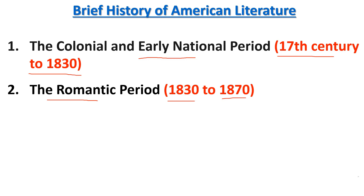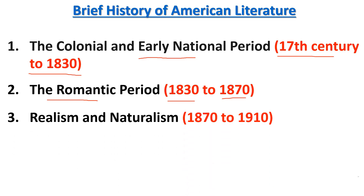Moving on to the third period in the history of American literature — that is Realism and Naturalism. The time duration for Realism and Naturalism is from 1870 to 1910. The important writers and literary figures of this period are the most prominent figures of the Realism and Naturalism movement.